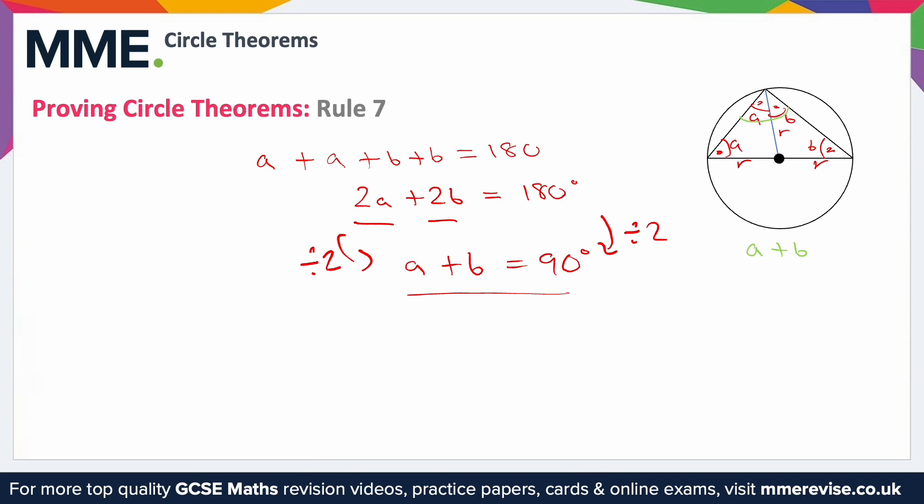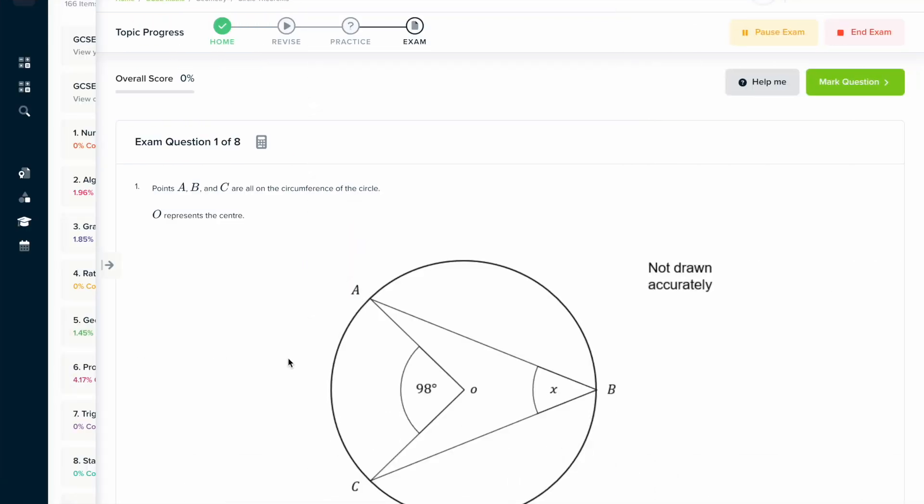So a plus b is 90. The angle that we were talking about that was inscribed inside the semicircle is a plus b, so therefore that angle is always 90 degrees. So again, a really complicated circle theorem and not immediately obvious at all how to prove this one. However, we can deduce from some relatively basic properties about triangles a very complicated circle theorem.